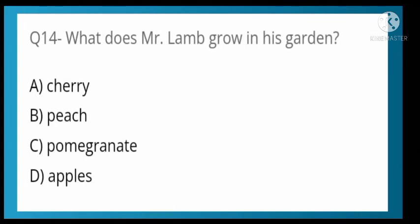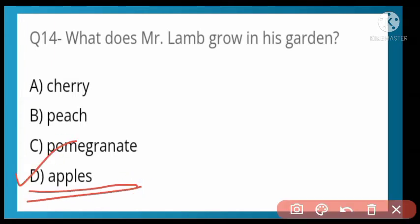What does Mr. Lamb grow in his garden? Options: cherry, peach, pomegranate, or apples. Option D is correct — apples. Throughout this entire topic, the fruit that appears is apples.